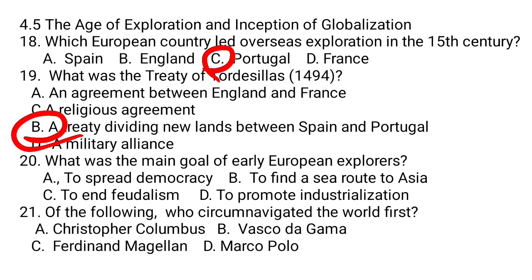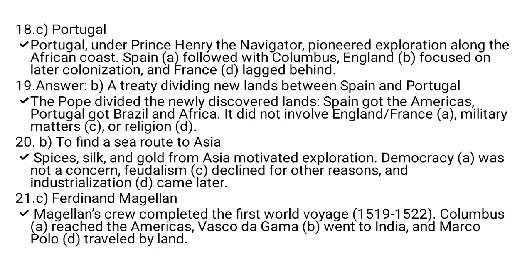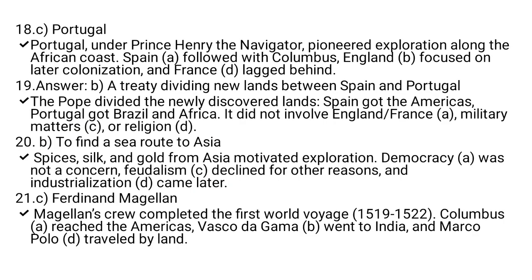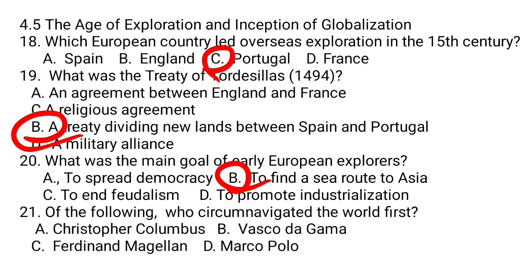The main goal of early European explorers was to find a sea route to Asia. Spices, silk, and gold from Asia motivated exploration. Democracy was not a concern, feudalism declined for other reasons, and industrialization came later. So B is the correct answer. For the first time, the world was circumnavigated by Ferdinand Magellan. Magellan's crew completed the first world voyage between 1519 and 1522, while Columbus reached America, Vasco da Gama went to India, and Marco Polo traveled by land. So C is the correct answer.